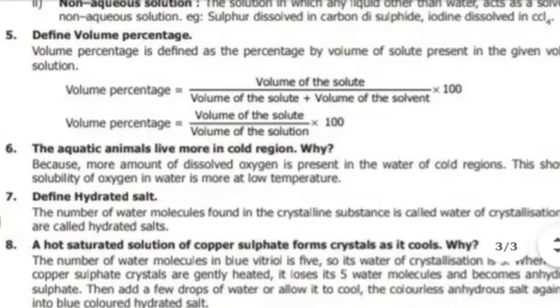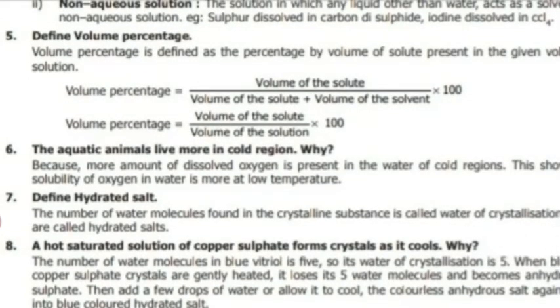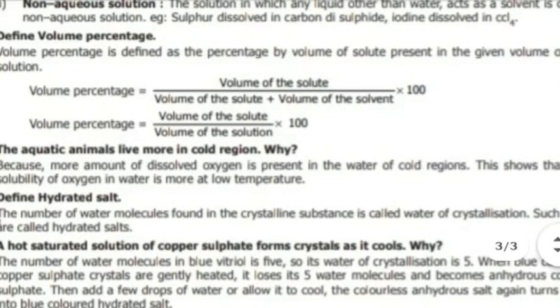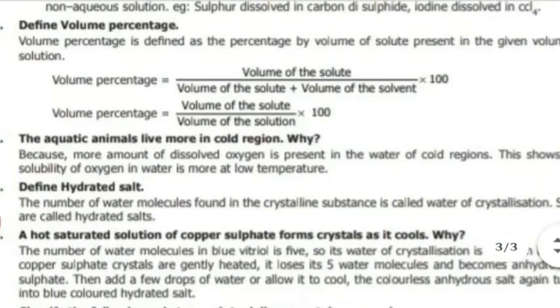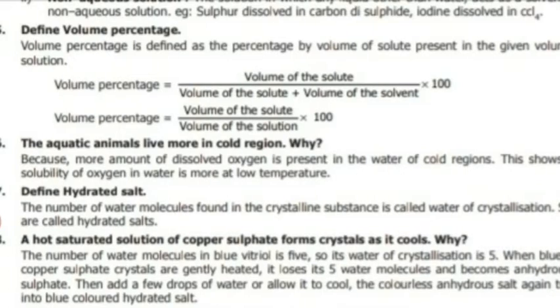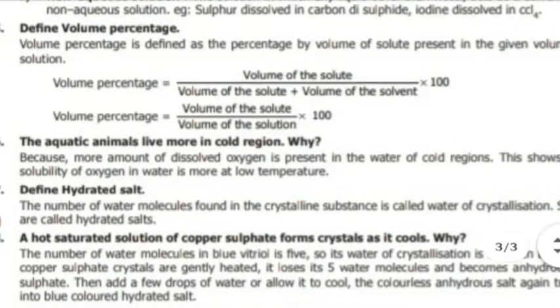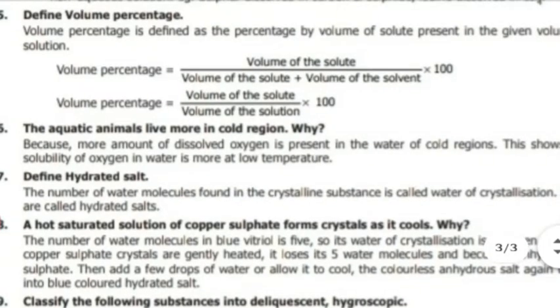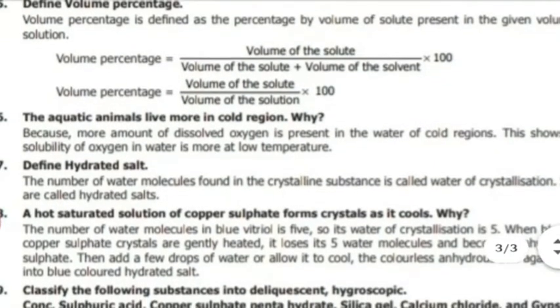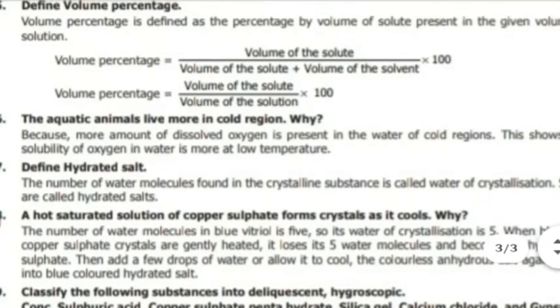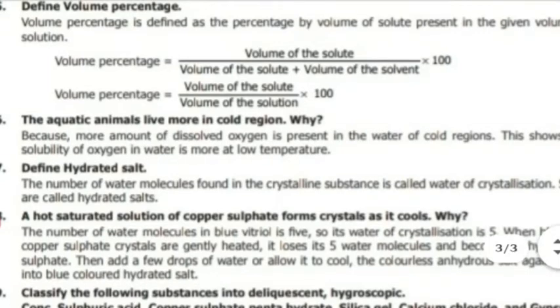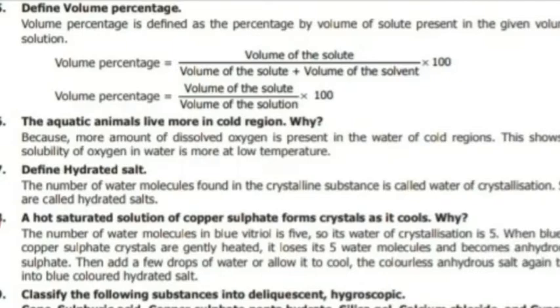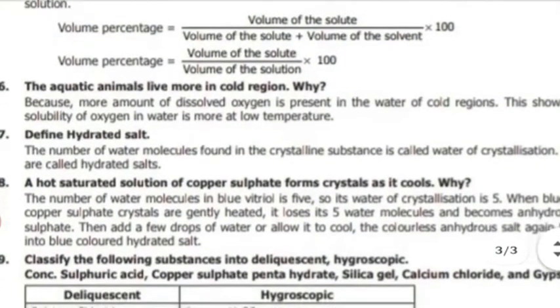Question 5: Define volume percentage. Volume percentage is defined as the percentage by volume of solute present in the given volume of the solution. Formula: Volume percentage = (Volume of solute ÷ Volume of solution) × 100.